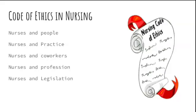The code of ethics in nursing — which you have studied in first year — includes five areas: nurses and the people, nurses and practice, nurses and co-workers, nurses and profession, and nurses and legislation. This covers how to protect people, maintain competencies and skill level in practice, communicate with co-workers, uphold the profession, and follow registration requirements under your council.